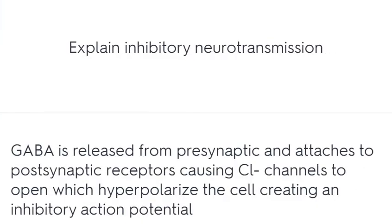Explain inhibitory neurotransmission. GABA is released from the presynaptic neuron and attaches to postsynaptic receptors, causing Cl- channels to open, which hyperpolarize the cell and create an inhibitory postsynaptic potential.